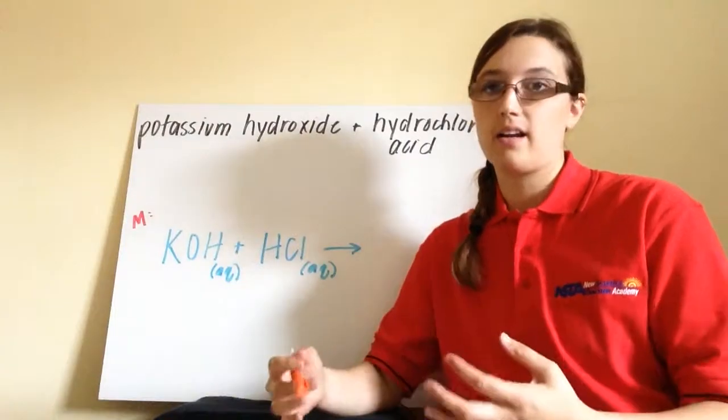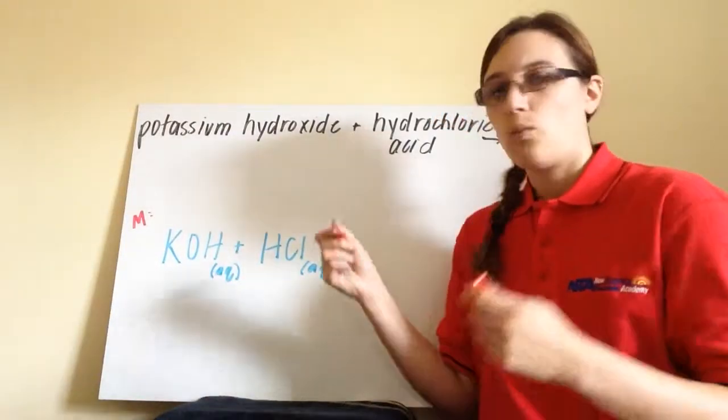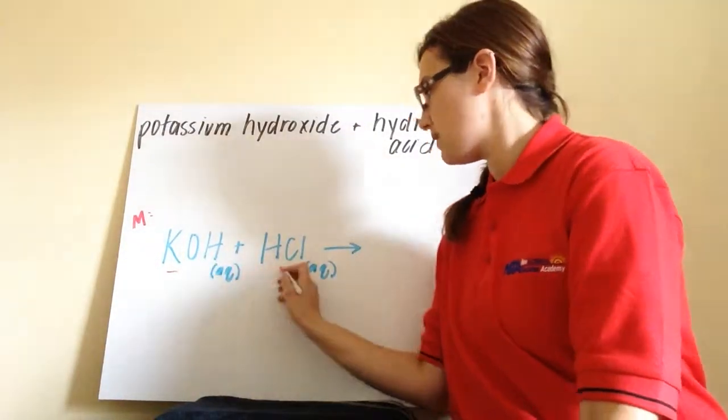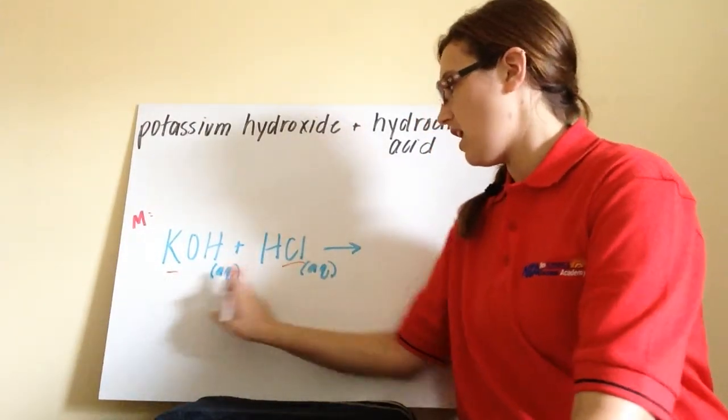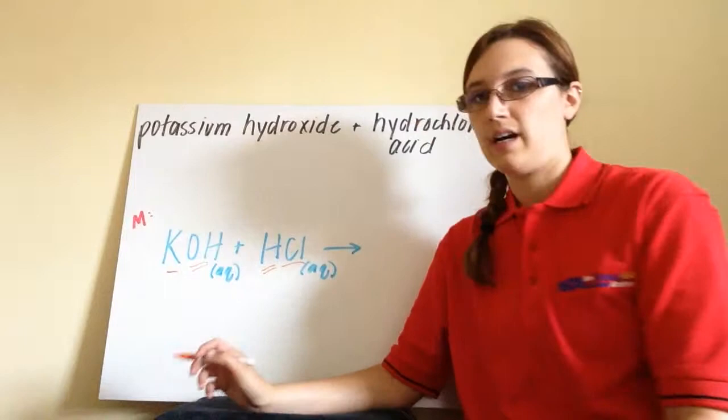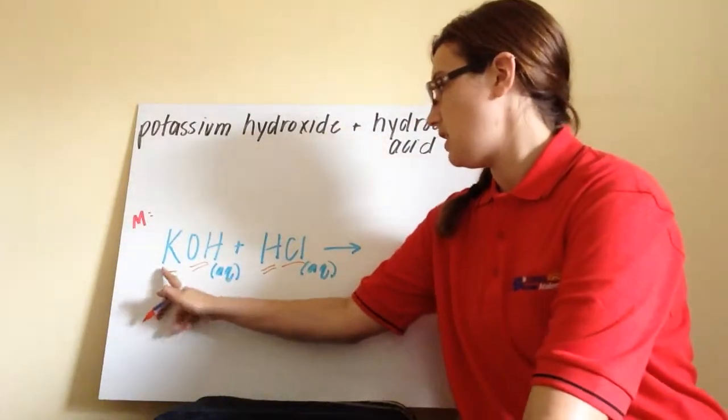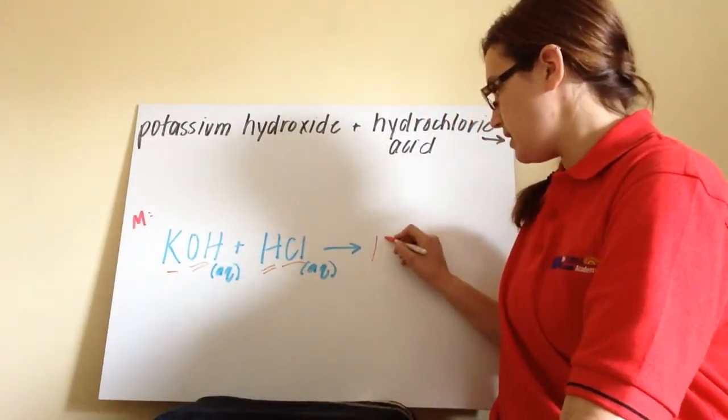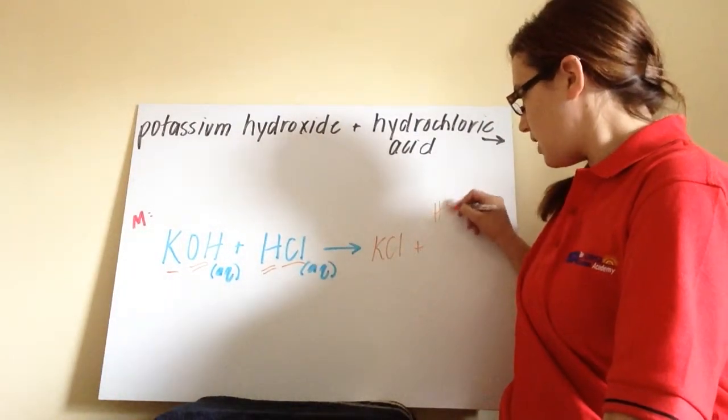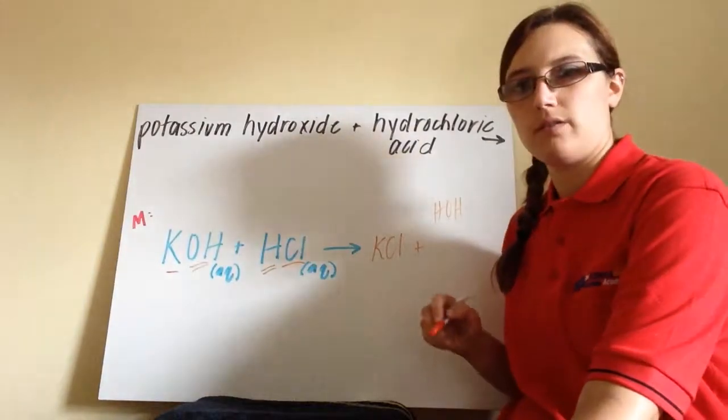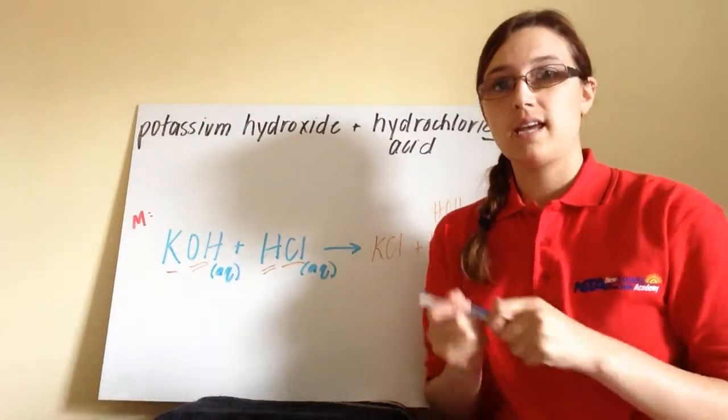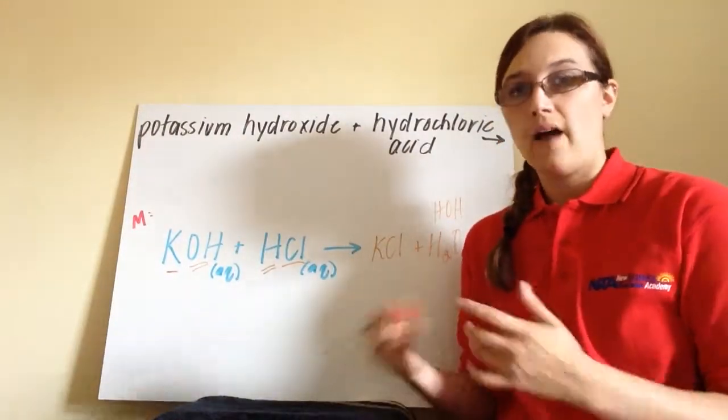The products of neutralization reaction is always a salt plus water. Now, a salt is any ionic compound. So if we look at this, we could exchange ions just like we would in a double replacement. The K will combine with the chloride. The H will combine with the hydroxide. So what we get is K plus combining with Cl minus forms KCl plus, think about we have HOH. HOH is the same as H2O. So our salt, in this case, is potassium chloride, and then we have water.